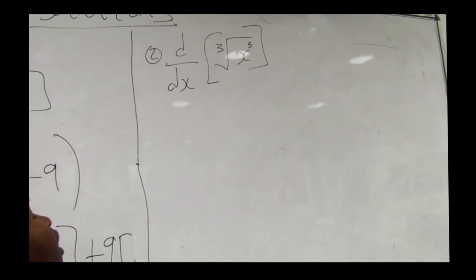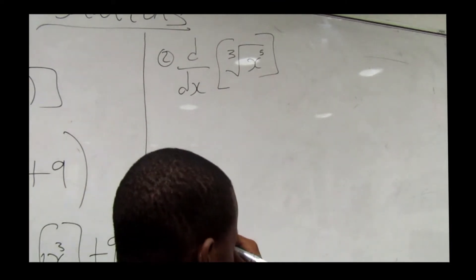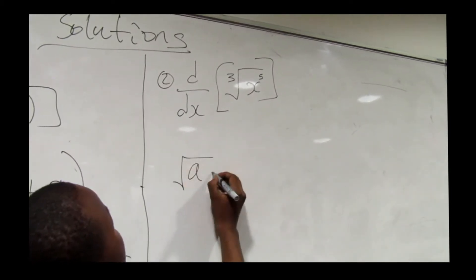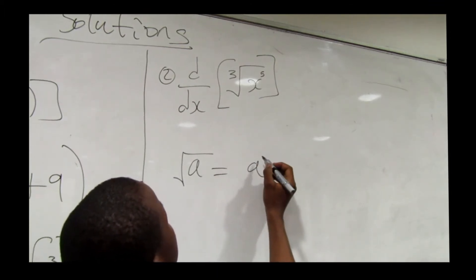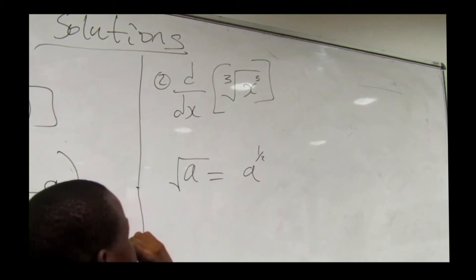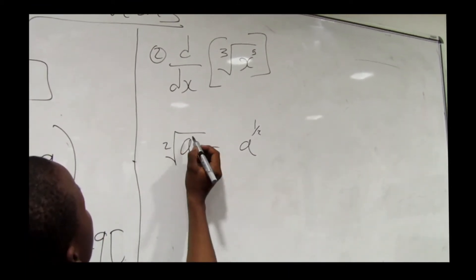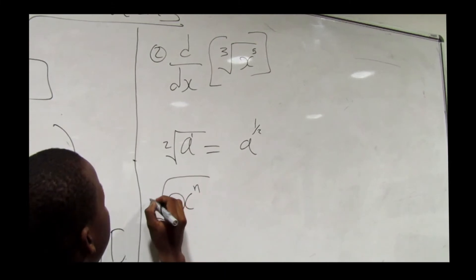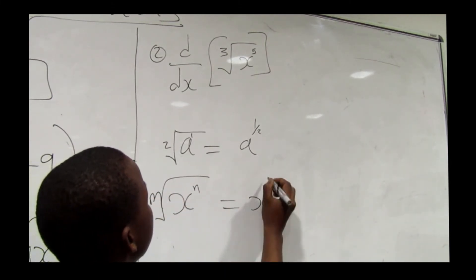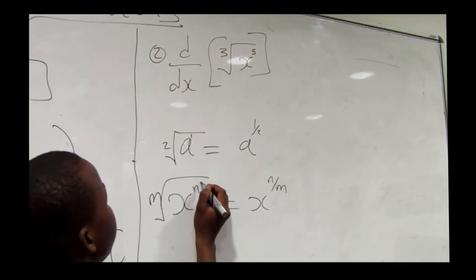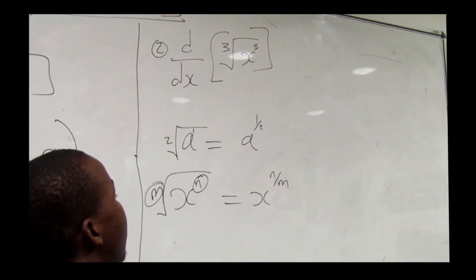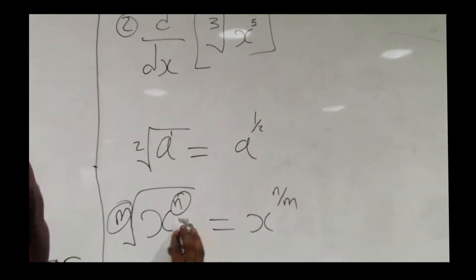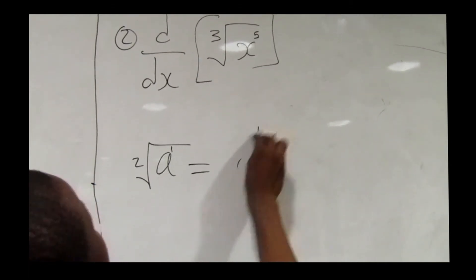Here we are going to use the rules of radicals. Remember: √a equals a to the power one over two, where 2 is the denominator and 1 is the numerator. More generally, x to the power n over m means the m-th root of x to the power n — n is always the numerator and m is the denominator of our exponent.